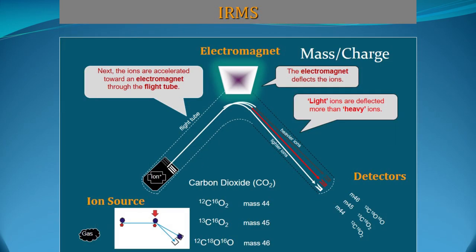There are three parts of the IRMS: first is the ion source, second is the electromagnetic field, and third is the detector. When ions enter into the magnetic field, they are deflected according to their mass-to-charge ratio. Lighter ions deflect more than heavier ions, and those ions are collected in different cups. This is the principle on which IRMS works.